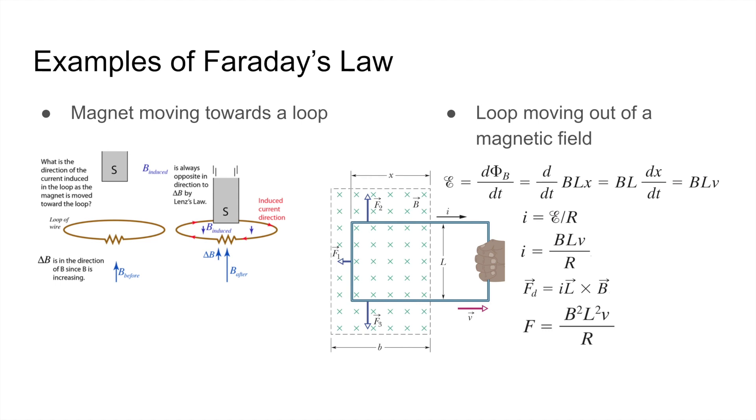the force is simply equal to B squared L squared V over R. To figure out the direction of the current, we look at how the magnetic flux changes. So when we're pulling the loop outside of the magnetic field, there's less and less field lines going through the loop. And since the field lines point inward, the change in magnetic flux would point outwards. And by Lenz's law, the induced magnetic field would have to point into the page, which means that the current would be clockwise.